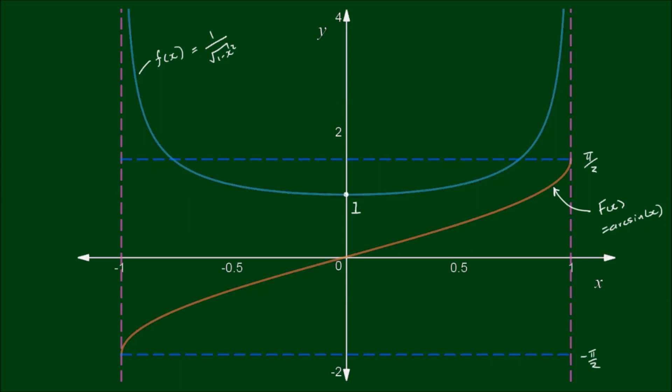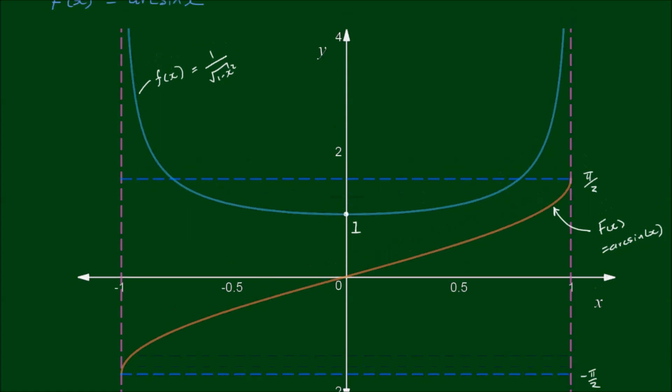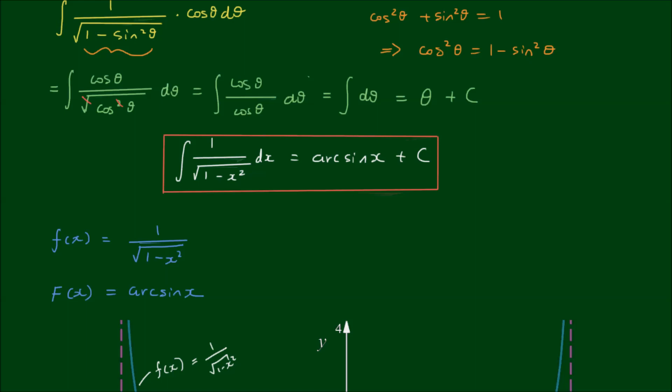So graphically, the result makes sense. And thus we conclude the integral of 1 over the square root of 1 minus x squared dx is equal to arc sine of x plus c.